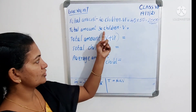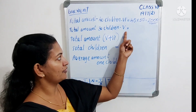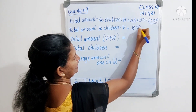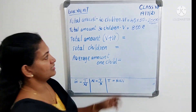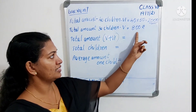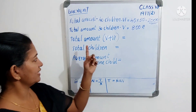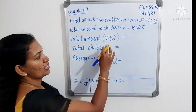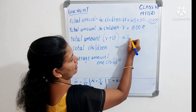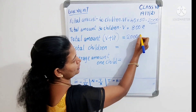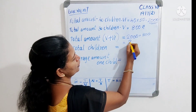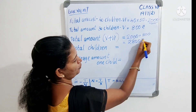For class 5, it is directly given that 30 children donated 800 rupees in all — it is not given how much one child gave. To find the total amount of both classes together, we add: 2000 plus 800 is equal to 2800 rupees.